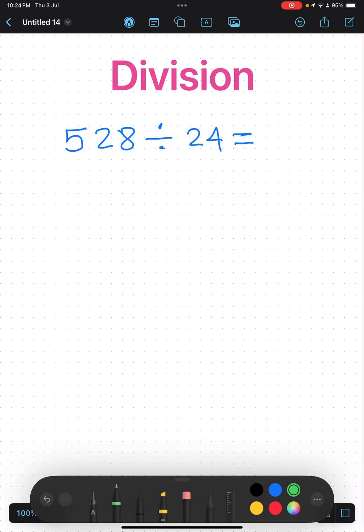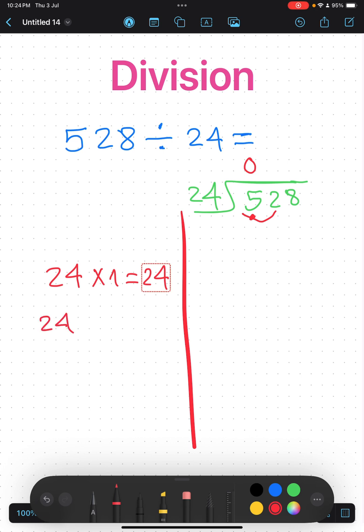This is a division problem: a number divided by a two-digit number. I will start with the left digit. 5 is smaller than 24, so I take one digit more to get 52. I search about 52 in the table of 24.